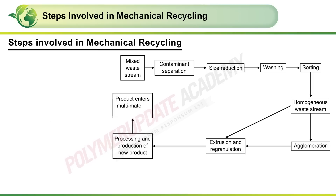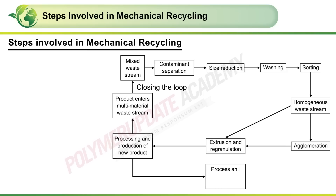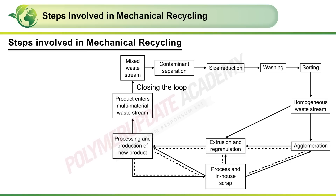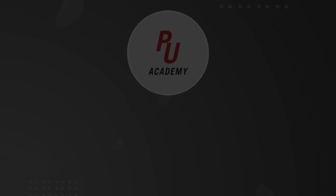These processes make further products which eventually meet the waste stream, hence closing the loop. The in-house scrap generated at all levels of processing can be taken back to the agglomeration stage for extrusion and brought back into the loop.